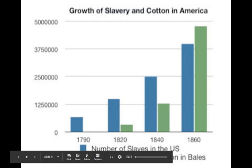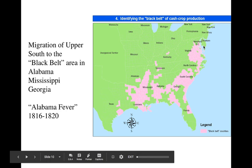The number of slaves increased alongside the number of bales of cotton — shown in green — so you can see the correlation. By 1860, cotton production exceeds the number of slaves. Here's the cotton gin appearing in the late 1790s, and you see the increase of cotton production from there.